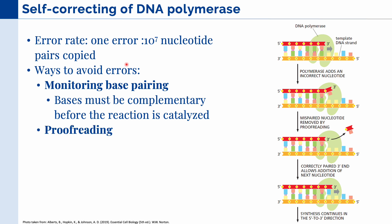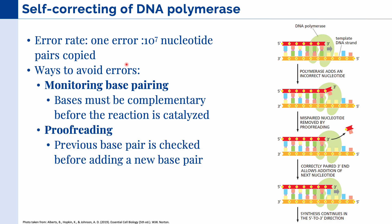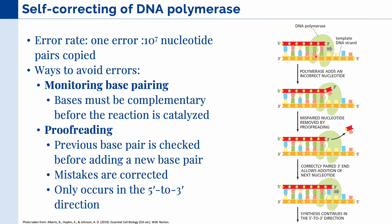DNA polymerase also has a proofreading ability — the previous base pair has to be checked before a new base pair can be added. In this figure, we can see that proofreading ability at work. Before a new base can be added, DNA polymerase checks the previous base pairs to confirm they are correct. If correct, it can proceed; if not, it must correct the mistake first. This proofreading ability can only occur in the 5' to 3' direction, which is another reason why DNA replication only happens in one direction.